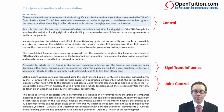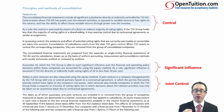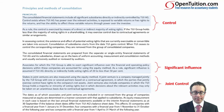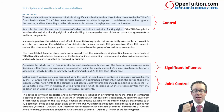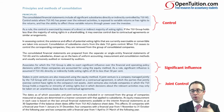Stakes in joint ventures are also measured using the equity method. A joint venture is a company managed jointly by the TUI group with one or several partners based on a contractual agreement, in which the parties jointly exercise control. The key point is that decisions need to be taken on a unanimous basis — everybody has to agree for something to happen; if people disagree, things don't happen. So that's telling you why they treated investments as such — why they have control, why they have influence, why they have joint control, and how they've done the accounting.